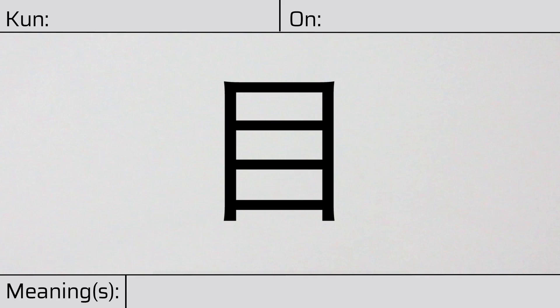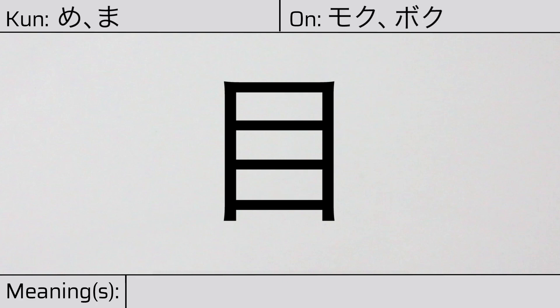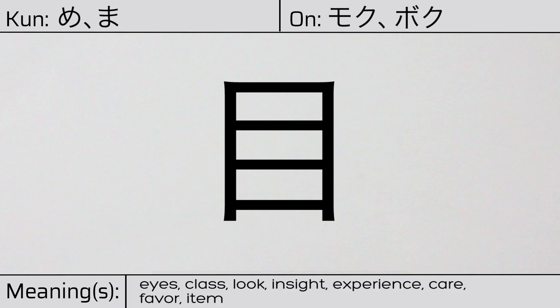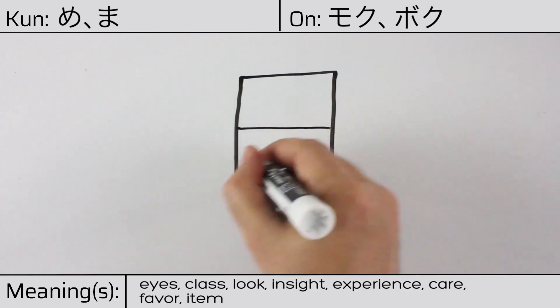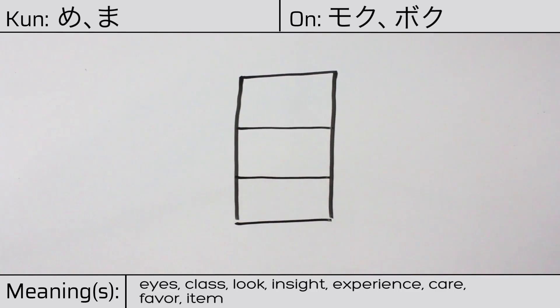Welcome to this lesson on Japanese kanji. Today, we'll be discussing this character. This kanji has kunyomi or Japanese readings of me or ma, and it has onyomi or Chinese readings of moku or boku. This character has the meanings eyes, class, look, insight, experience, care, favor, or item. Here is the stroke order. This character has no radicals, but is itself a radical in many other composite kanji.